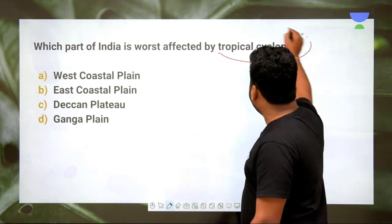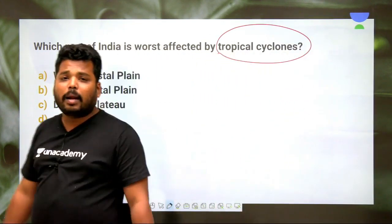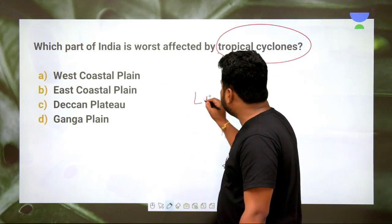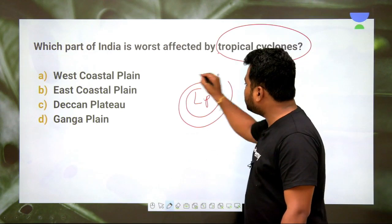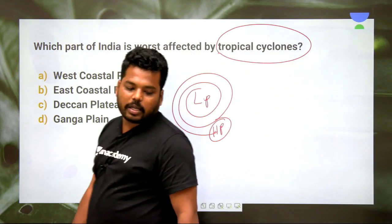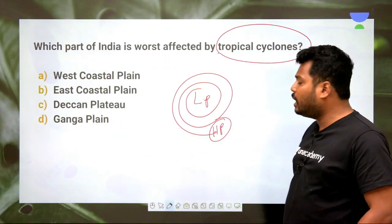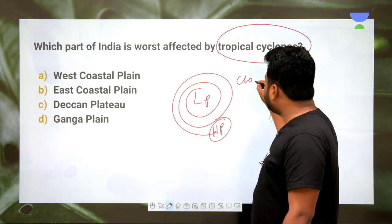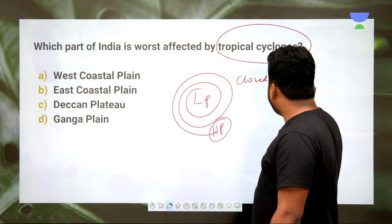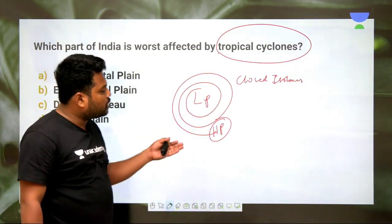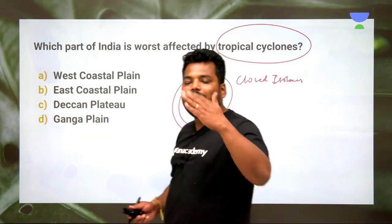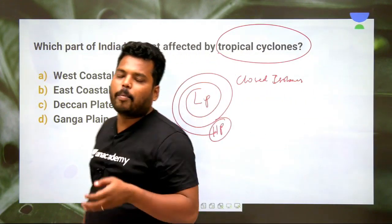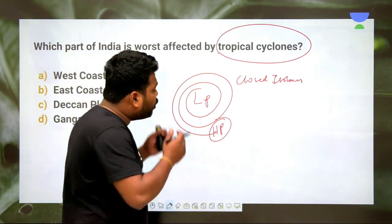The next question: which part of India is worst affected by tropical cyclones? A cyclone is a low-pressure system surrounded by high pressure, with closed isobars attaining a whirling motion. Tropical cyclones occur between 8 and 22 degrees latitude and take an anti-clockwise direction in the Northern Hemisphere and clockwise direction in the Southern Hemisphere.